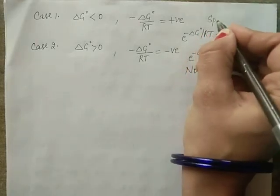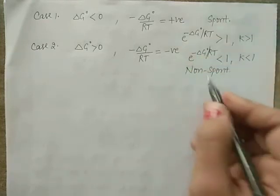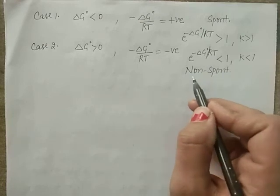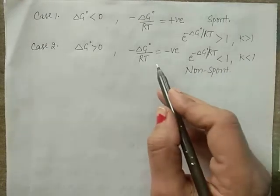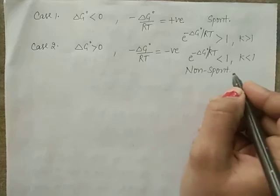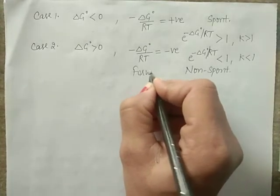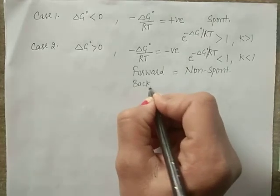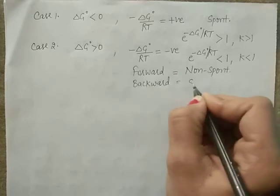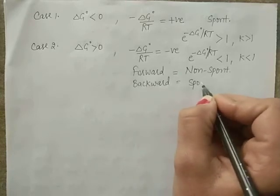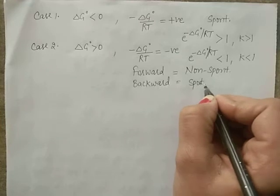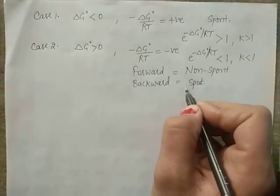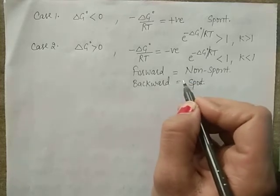Where case 1 had a spontaneous reaction, here in case 2 the reaction is non-spontaneous in the forward direction but spontaneous in the reverse direction. It means reactants predominate over the product, and the reaction occurs rarely.